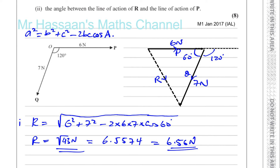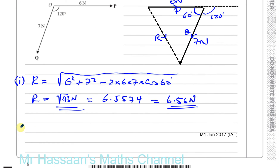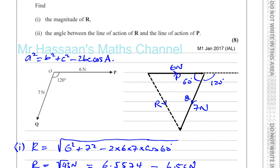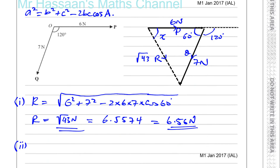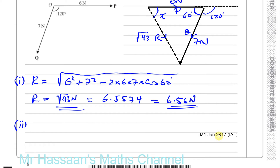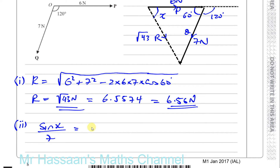For part two, we can use the same triangle diagram. What we need to find is the angle between the line of action of R and the line of action of P — let's call this angle X. Since we now know all three sides, we can use the sine rule. Sine X over 7 equals sine 60 degrees over root 43, because those are pairs of opposite sides and angles.